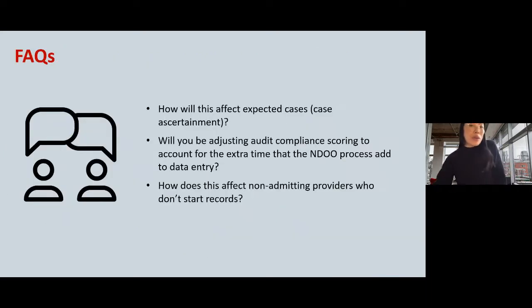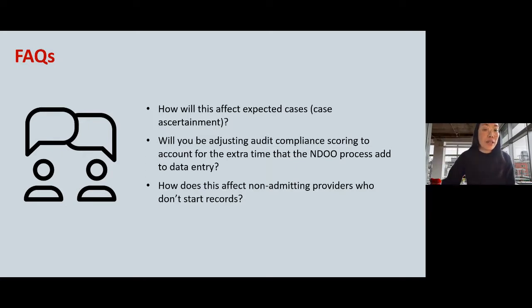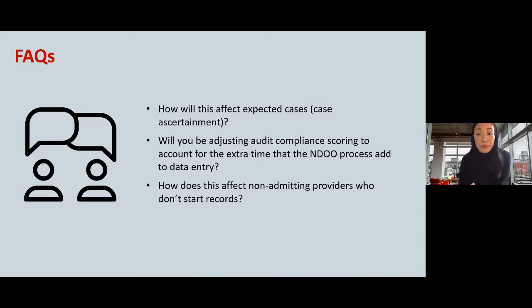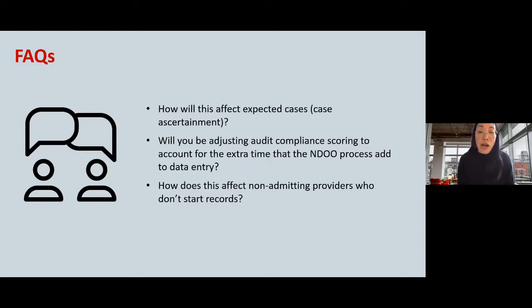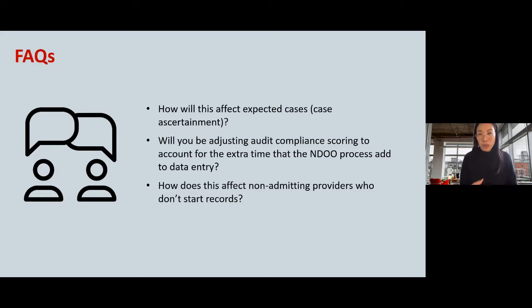FAQ: how will the National Data Opt-Out affect expected cases or case ascertainment? As of September, about 5% of patients nationally have opted out, though this can vary regionally. If you find high rates of opt-out are affecting your team's ability to meet the expected cases threshold, get in touch with the Help Desk and we can adjust your cases on a case-by-case basis.